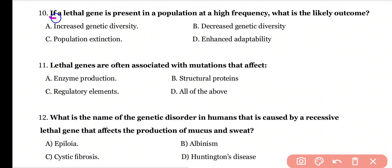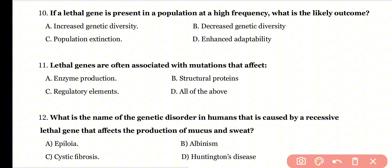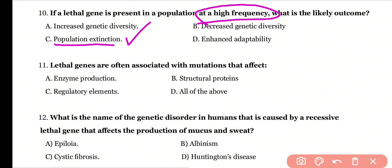Question 10: If a lethal gene is present in a population at a high frequency, what is the likely outcome? Increased genetic diversity, decreased genetic diversity, population extinction, or enhanced adaptability? Correct answer is option C. If a lethal gene is present at a high frequency within a population, the most likely outcome is that the population will become extinct.